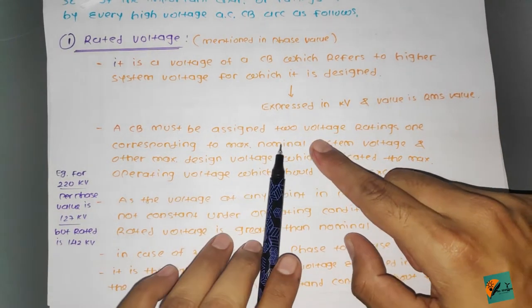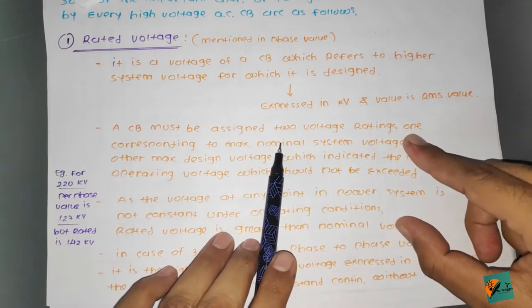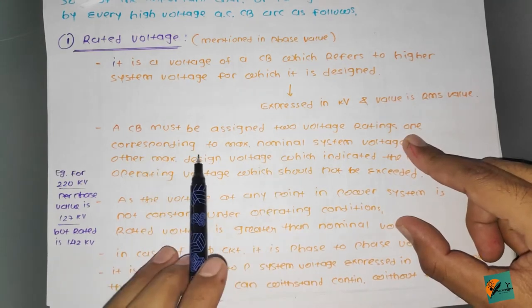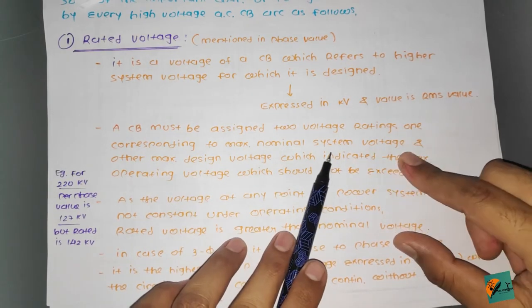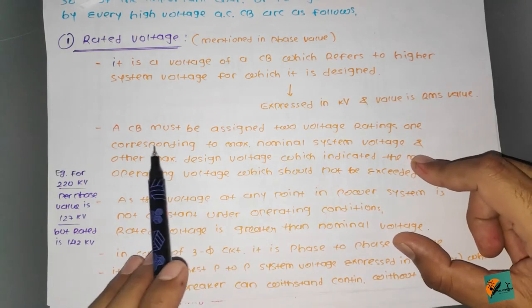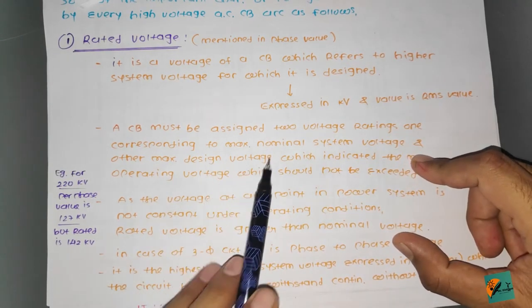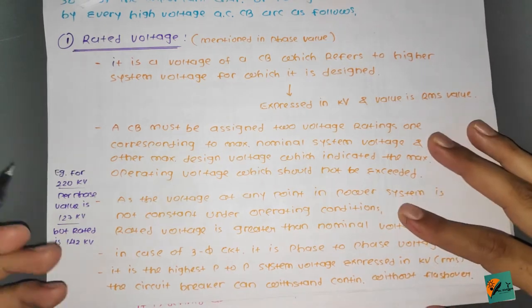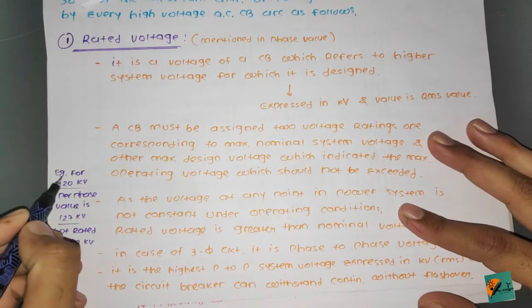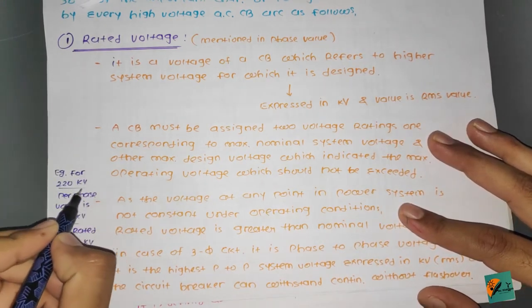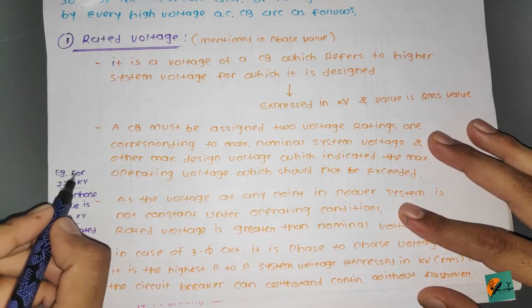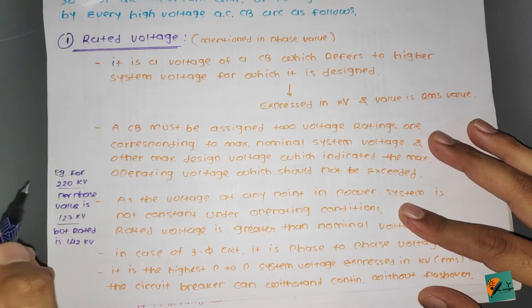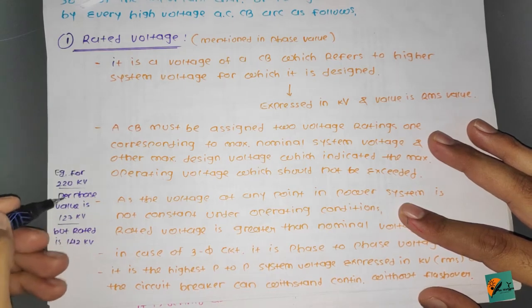The circuit breaker must be assigned two voltage ratings: one corresponding to the maximum nominal system voltage, and the other to the maximum design voltage. For example, if we have a 220 kV line, we need to consider the per-phase value accordingly.